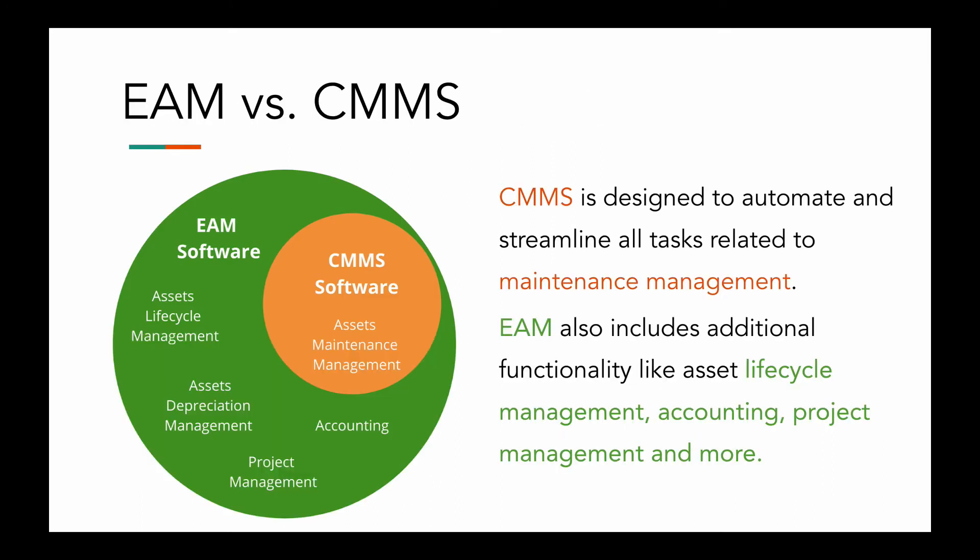Let's look at the difference between an EAM and a CMMS. While many asset management software providers offer both, they're not the same. Computerized maintenance management systems, or CMMs, are specifically designed to automate and streamline maintenance management tasks. EAM software covers all of that but also includes additional functionality like asset lifecycle management, accounting and finance management, project management, and more — taking a broader, more holistic approach. In essence, a CMMS offers strong core asset management features, while EAM offers a wider range of functionalities. It's like comparing a cyclist to a triathlon athlete.